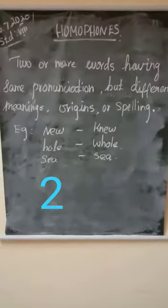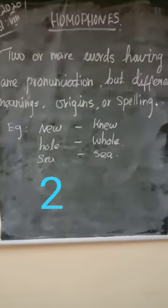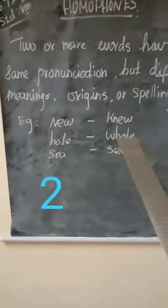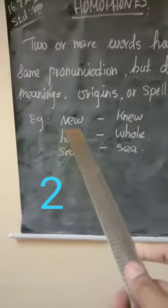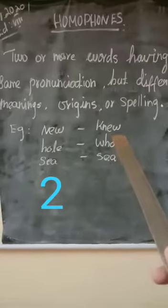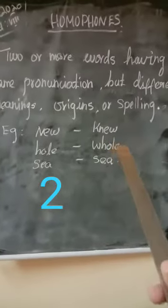New, new. See, the pronunciation is same. But this new defines pudusu, new one. And the second one, knew, defines already I knew. This new defines pudusu, this defines I know, I knew. Knew is the past tense of know. Sorry, know.